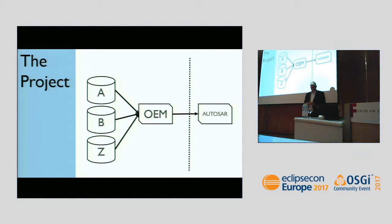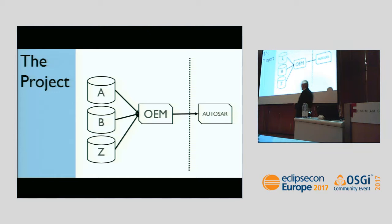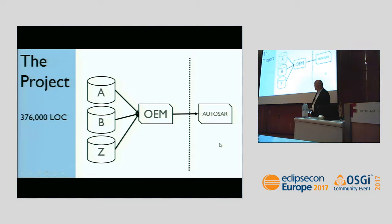The models are huge. Each model describes a computer in the car — could be an infotainment unit or a motor control unit — with easily several hundred thousand model elements being generated and transformed. This is probably one of the largest Xtend model projects we know of. Right now it's around three hundred and eighty thousand lines of Xtend code.